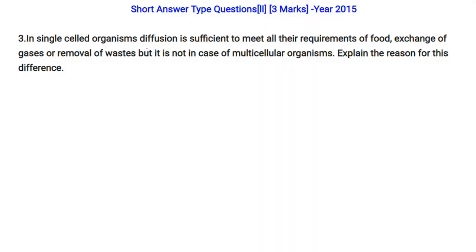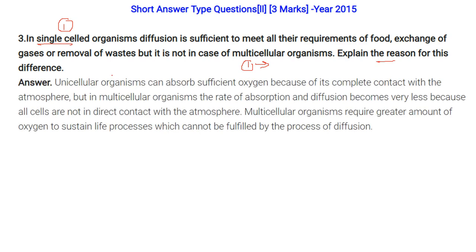In single-celled organisms, diffusion is sufficient to meet all requirements of food, gas exchange, and waste removal, but this is not suitable for multicellular organisms. Unicellular organisms are in complete contact with the atmosphere, so oxygen absorption is sufficient. In multicellular organisms, not all cells are in direct contact with the atmosphere, so the rate of absorption and diffusion is much less. They require a greater amount of oxygen, which cannot be fulfilled by diffusion alone.